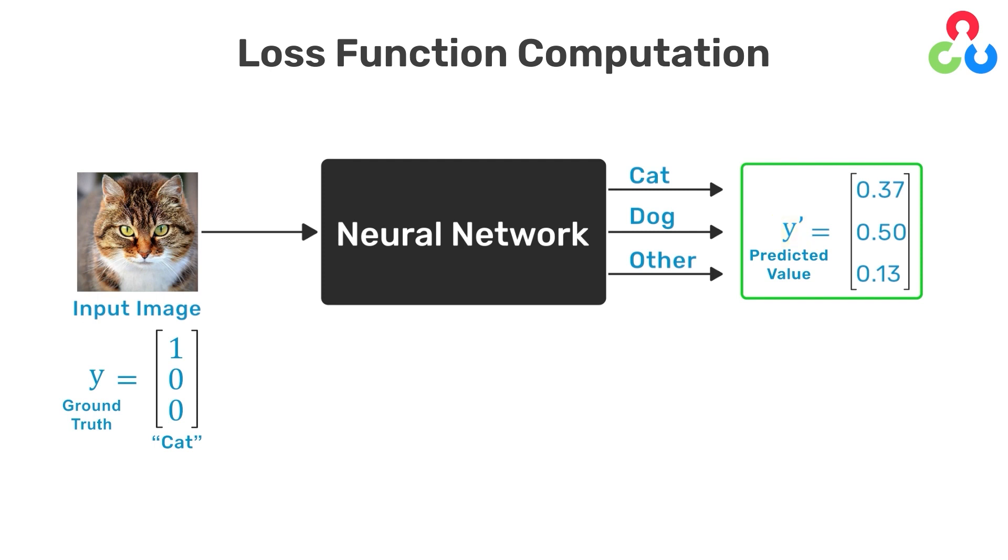Here we show an example where the network produces an output vector with entries 0.37, 0.50, and 0.13. Since the second value is the maximum value, the predicted class label for this output represents a dog, which is obviously incorrect, but we'll use this as an example for how to calculate the loss for a single training example.